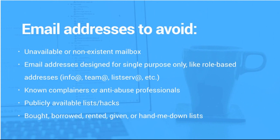Here are some general email addresses to avoid before you add them to your list manually or from signups: unavailable or nonexistent mailboxes, and email addresses designed for a single purpose — role-based addresses like info@, team@, or any address that goes to multiple people at once rather than one particular contact. Also avoid people who don't want to be on your list, purchased lists, and publicly available lists. Only allow legitimate contacts who sign up themselves to join your list, and remember — that's after double opt-in, so a confirmation message is sent after they submit.